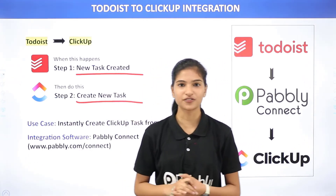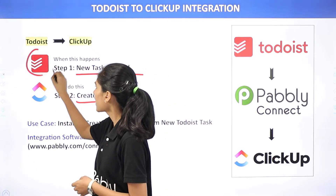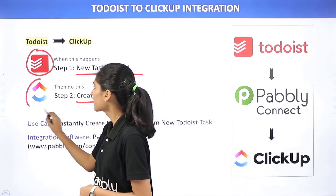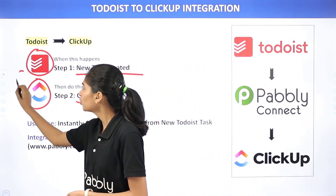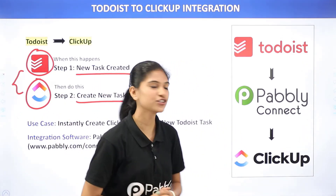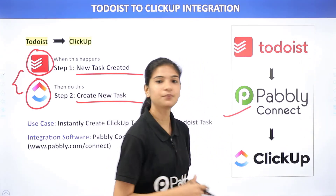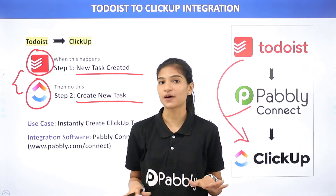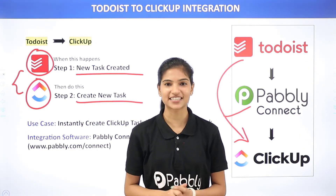Let us know what these two software applications are all about. Todoist helps you to manage your projects and tasks, whereas ClickUp is a project management tool. The issue is that these two applications don't have any integration between them, and that is why we are going to use Pabbly Connect. Pabbly Connect is an integration software which will help you transfer data from Todoist to ClickUp. The best part is you don't require any knowledge of coding. So let me show you this on my screen.